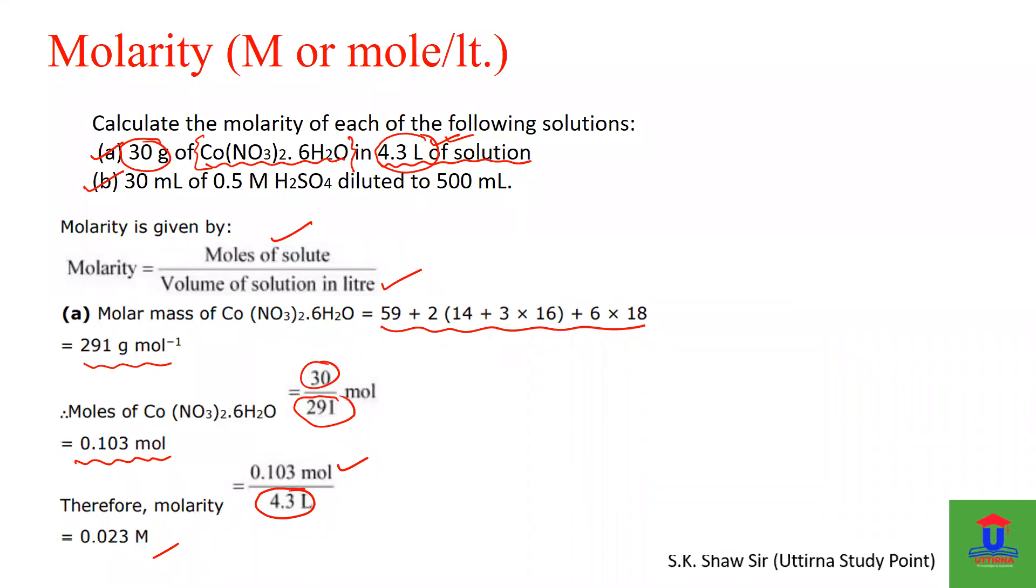30 ml of 0.5 M H2SO4. Look what this 0.5 M represents. What is this? It is molarity, molarity itself. So 30 ml of 0.5 M H2SO4 diluted to 500 ml. Now this is very interesting. If you solve this question, then what do we have to find? Yes, that is the basic of this question. You have to understand what you need to find. It is already given in the question. You have to calculate the molarity.